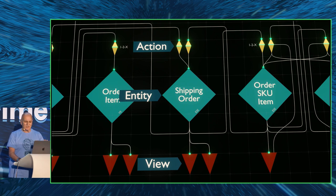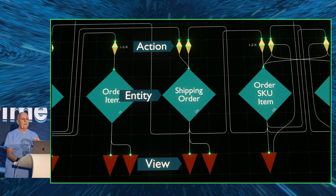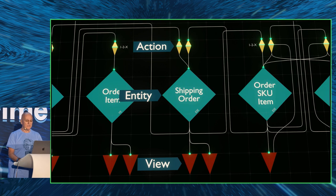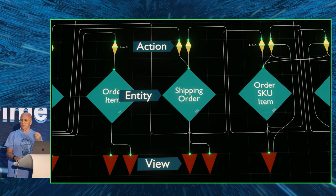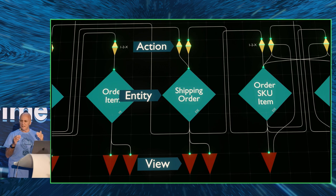The other interesting thing about this system is there are just three fundamental components used to build it. The services themselves — in this implementation called entities — are very small, very focused microservices. You can also think of them as distributed, durable, stateful objects. Then there are actions — stateless functions that take in an event and transform events coming downstream into commands that go further down to the next service. For example, a checkout event goes into an action that transforms it into a 'create order' command. This is how you wire everything together, with a kind of detachment between the services through these wiring functions.